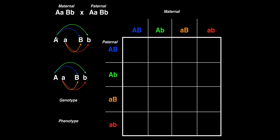I take the maternal genotype — I've color-coded them. I'm going to take the big A and pair it with both Bs. So I can get big A, big B (in blue), and big A, little b (in green). Now I take the recessive little a allele in orange and pair it with big B: little a, big B. And then little a in red paired with little b, giving two recessive alleles: little a, little b.